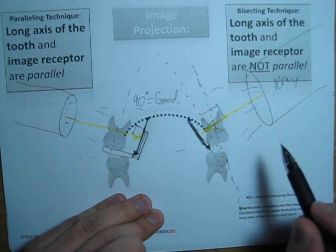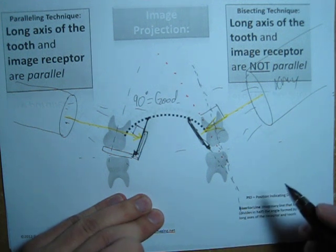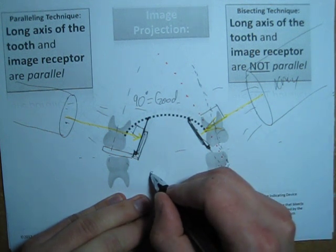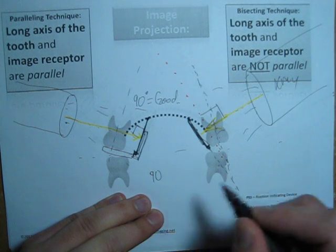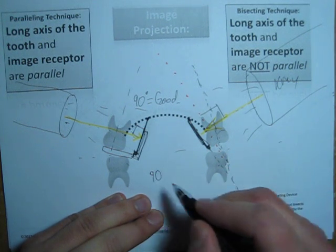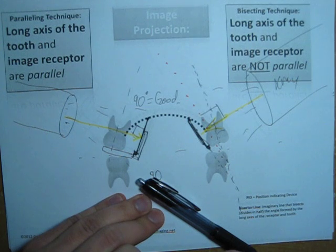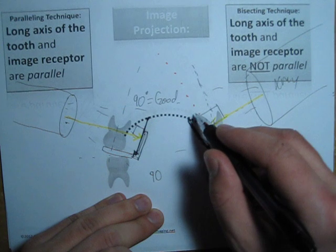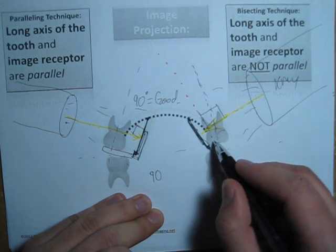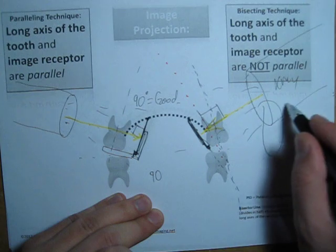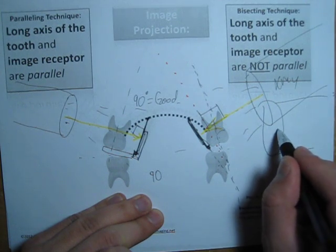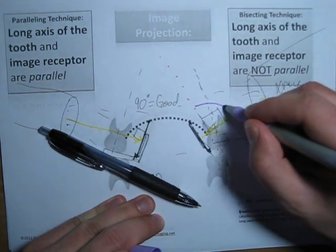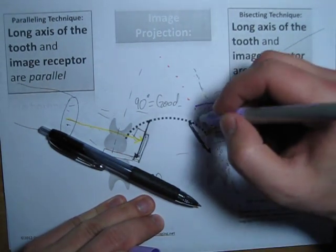Now, the other option is you could have an elongated image or a foreshortened image. An elongated image would have more than 90 degrees angle. So for the bisecting technique, say this is still the bisecting technique, and the PID would be maybe right here. And it would now form this angle, which is more than 90 degrees.